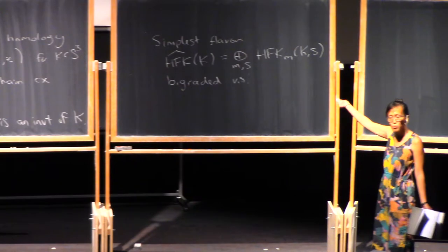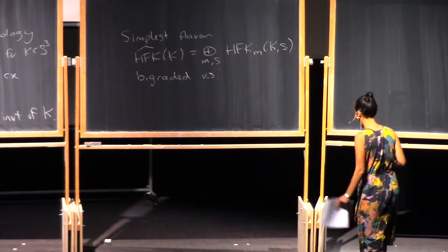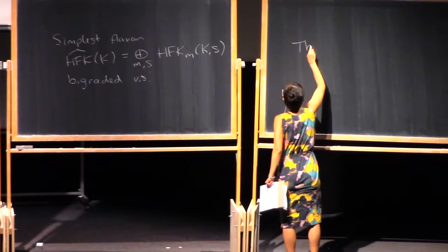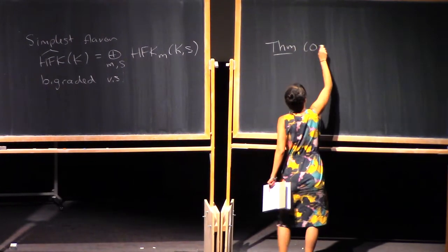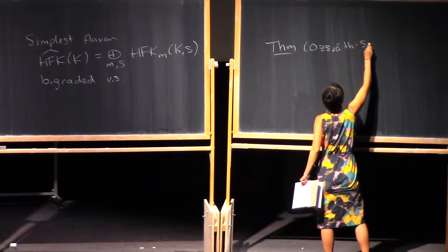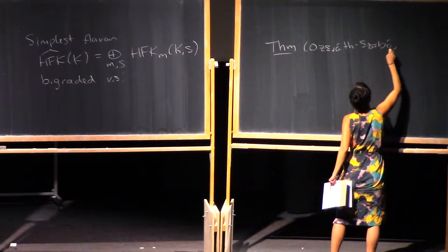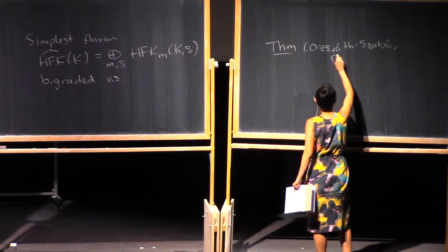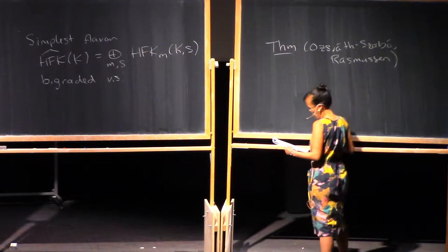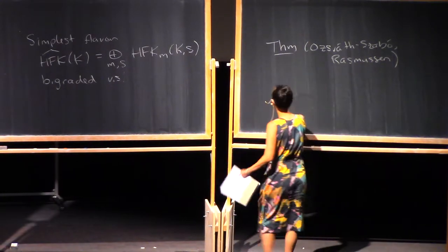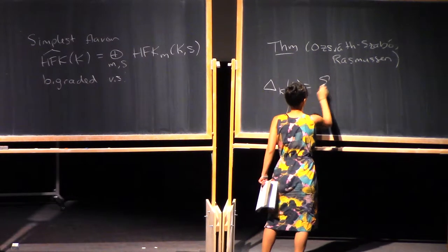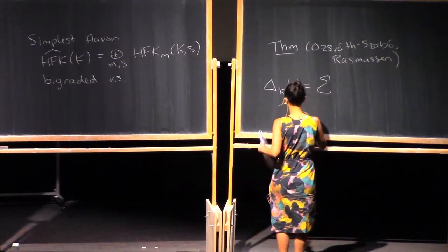The simplest version categorifies the Alexander polynomial. We have the following theorem, due to Ozsváth-Szabó and independently Jake Rasmussen, which says that the Alexander polynomial is the graded Euler characteristic of knot Floer homology.